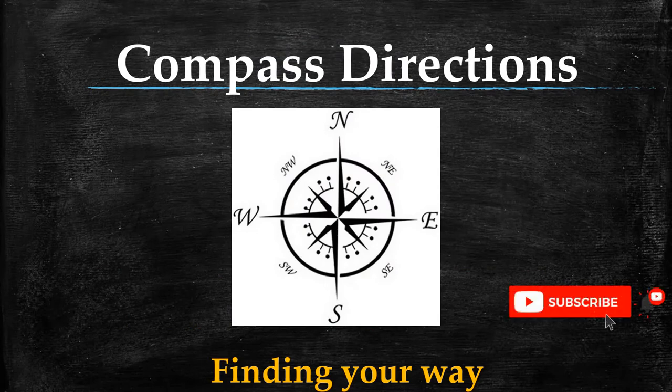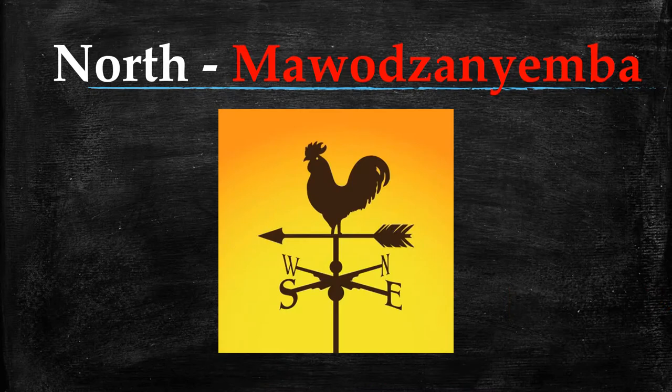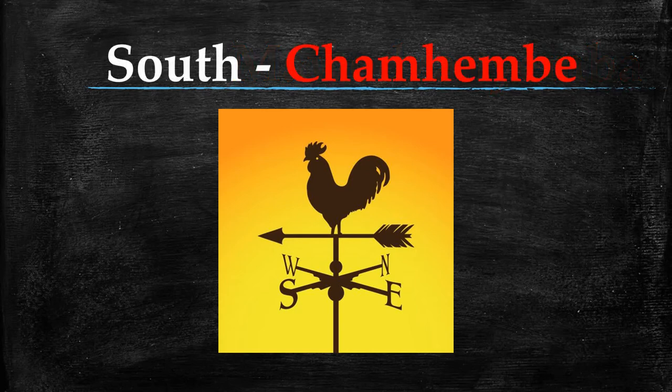We are going to start with the north. In Shona the north is called Mawodza Nyemba. The south is Chamembe.